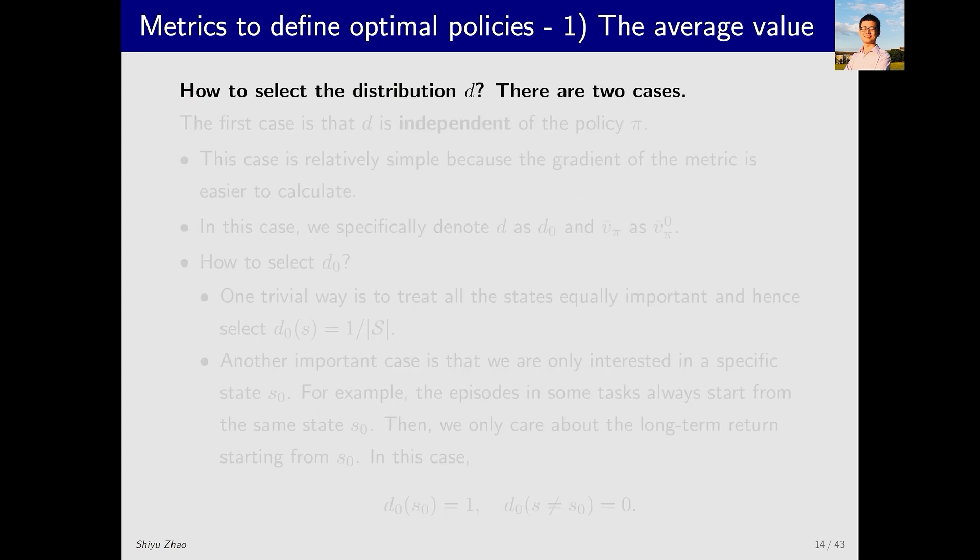This is the first metric we introduced, but it's not fully explained yet. Why? Because we haven't discussed d(s). Let's now see how to choose d(s). There are two cases for this. The first case is that d is independent of the policy π. This case is relatively simple. The second case is that d depends on π. Let's first look at the case where d and π are independent.